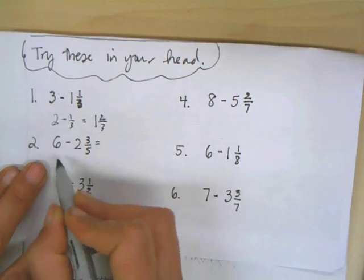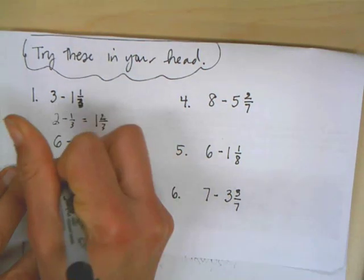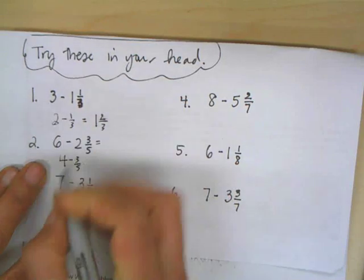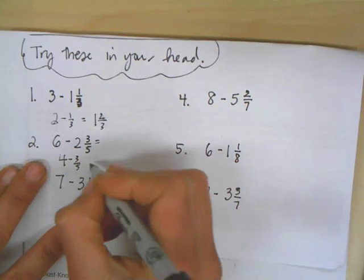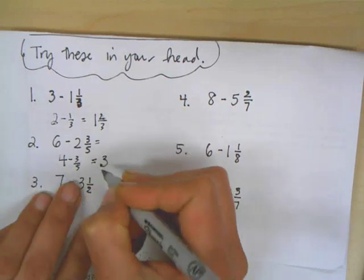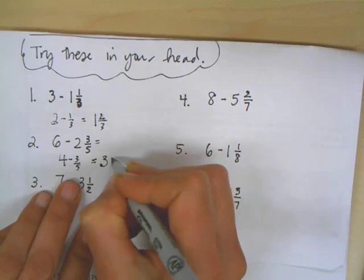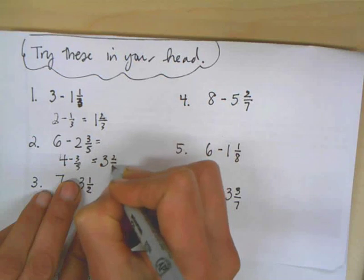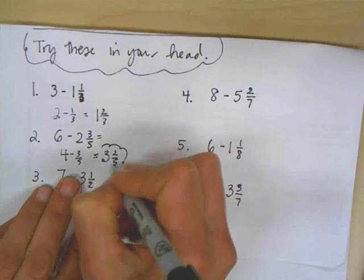Okay, do the whole numbers first. 6 minus 2 is 4 and then take away the 3 fifths. So I have 4. I'm taking away from it, so I have less than 4 now. So I have 3. Take away 3 fifths, so I have 2 fifths left out of that whole that I borrowed it from.